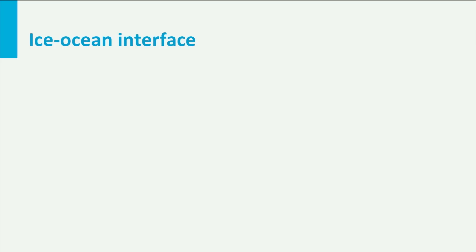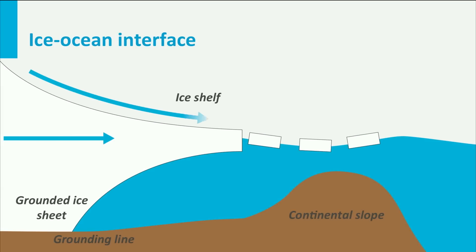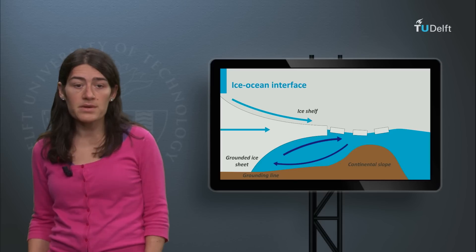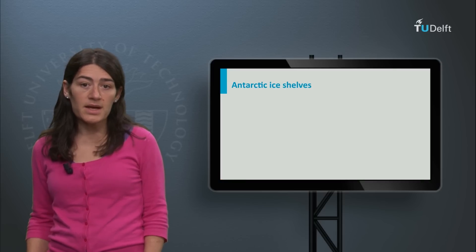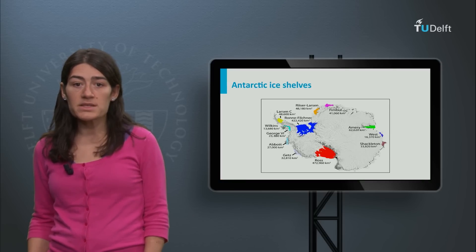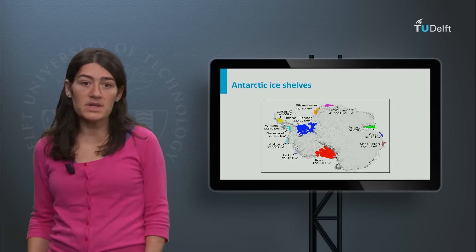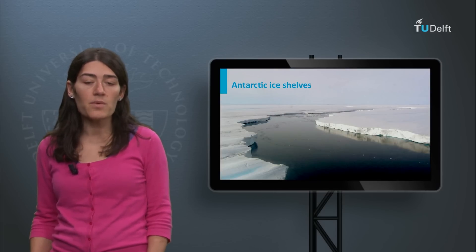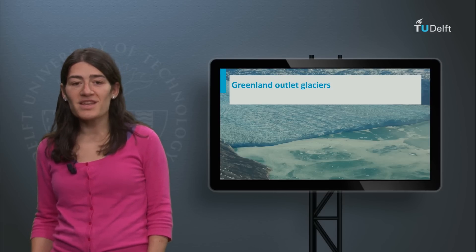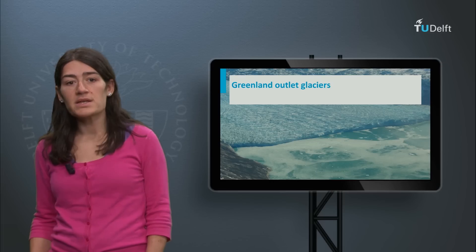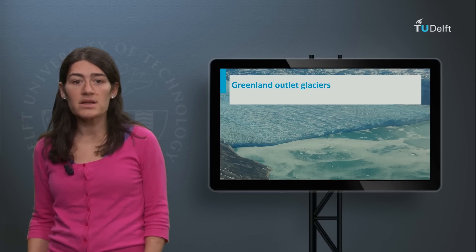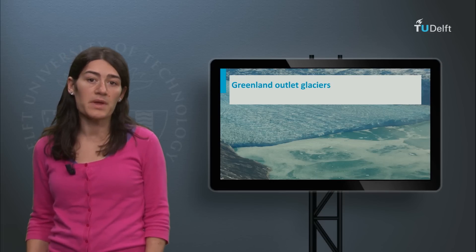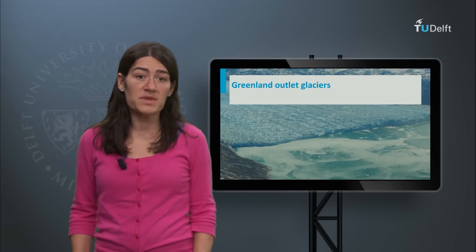In an ice sheet, ice flows from the cold interiors to the margins. When it reaches the ocean, it may float or move in contact with the submarine bedrock. In Antarctica, most of the marginal ice floats in the form of ice shelves, some of them with an area equal to Germany. In Greenland, most ice is discharged through glaciers of a few kilometres width that do not have a floating tongue.